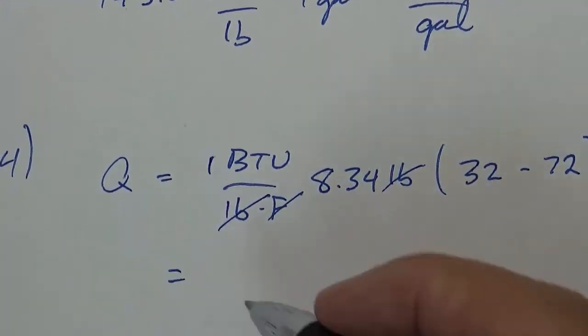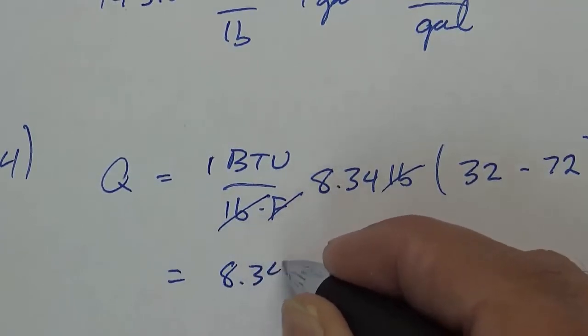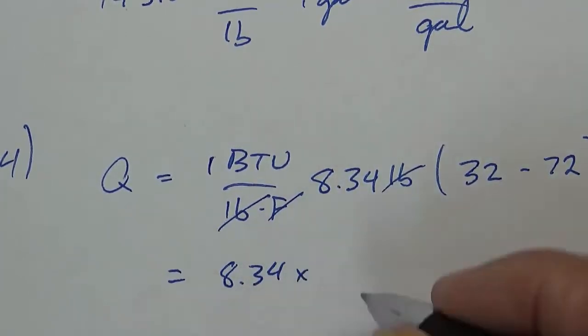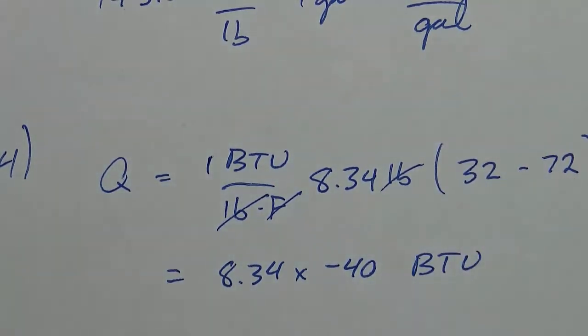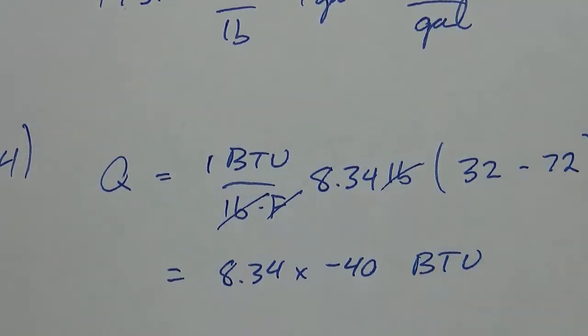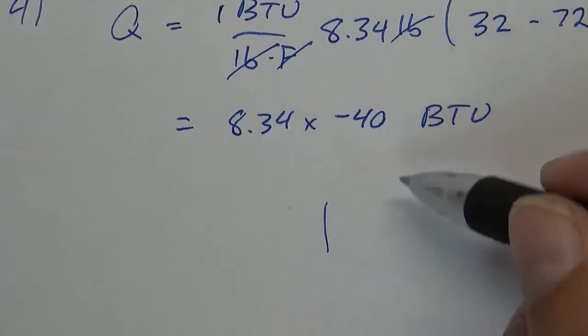And I'm going to have 8.34 times negative 40 BTU. Now the book says how many BTUs are being removed, so that's going to make that a positive number.